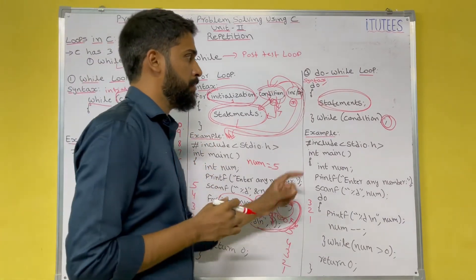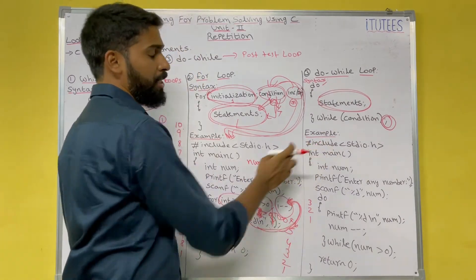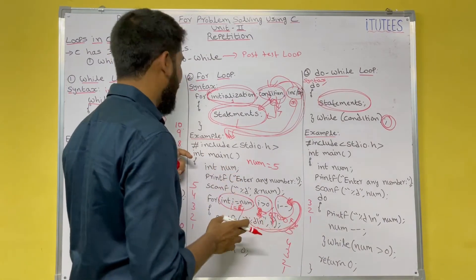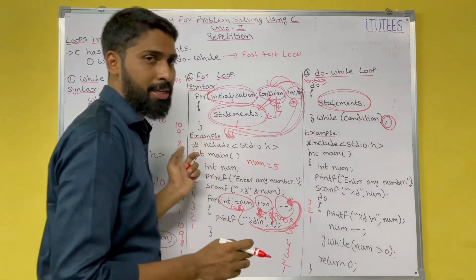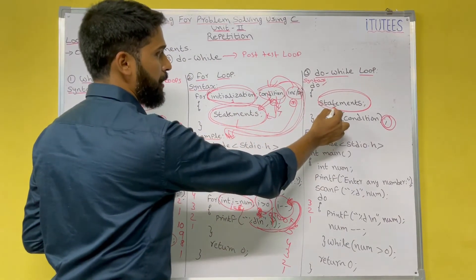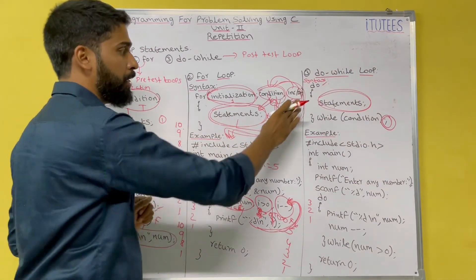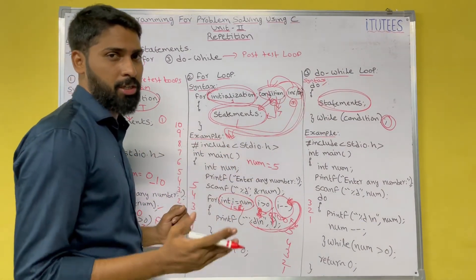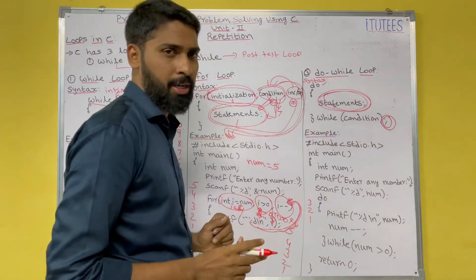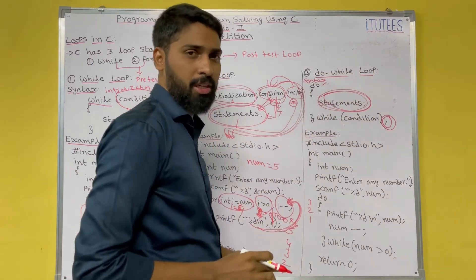Now the same example using do-while. What is the difference between while and do-while? This is a very important question. While is a pre-test condition — before executing the statements, you check the condition. But in do-while, it is a post-test condition — first execute the statement, then check the condition.